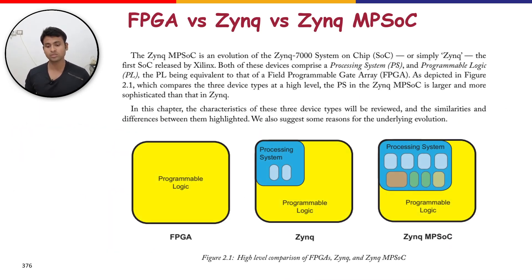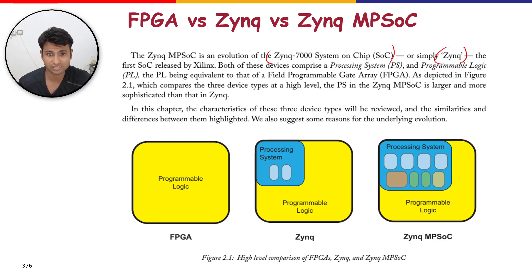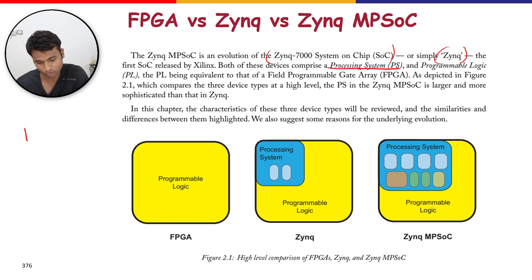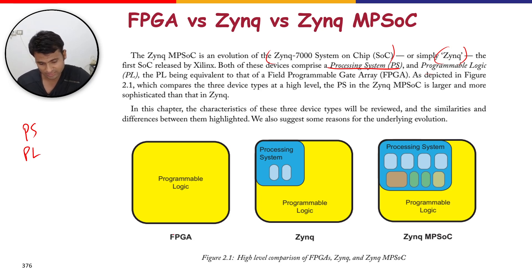The Zynq MPSOC is an evolution of the Zynq 7000 SOC, one of the first SOCs released by Xilinx. Both devices comprise a Processing System (PS) and Programmable Logic (PL), where the PL is equivalent to an FPGA. As depicted in the figure, the PS in the Zynq MPSOC is larger and more sophisticated than in the original Zynq.